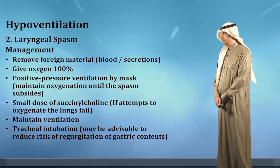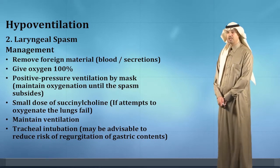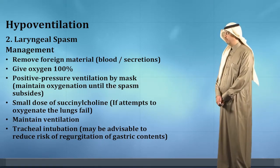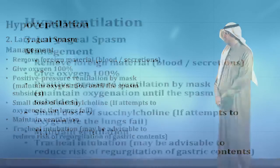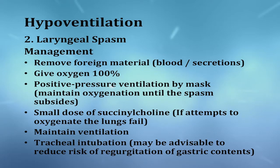Management involves first removing any foreign materials such as blood or secretions, then giving 100% oxygen. Start positive pressure ventilation by mask to maintain oxygenation until the spasm subsides. Small doses of succinylcholine may be utilized if attempts to oxygenate the lungs fail. If all these measures fail, tracheal intubation may be advisable.